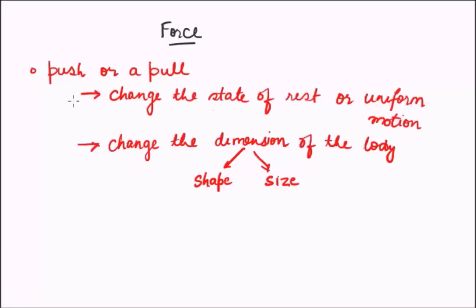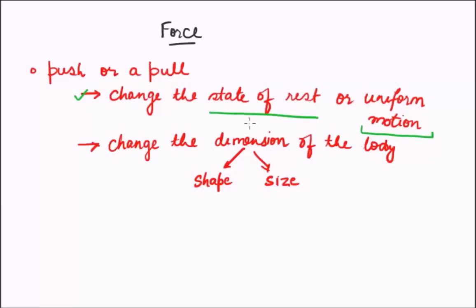Let us now discuss in further detail the effects that force can produce. The first effect is that it can change the state of rest or the uniform motion of a body. To understand what the force is doing, we need to understand what the state of rest means and what uniform motion means.